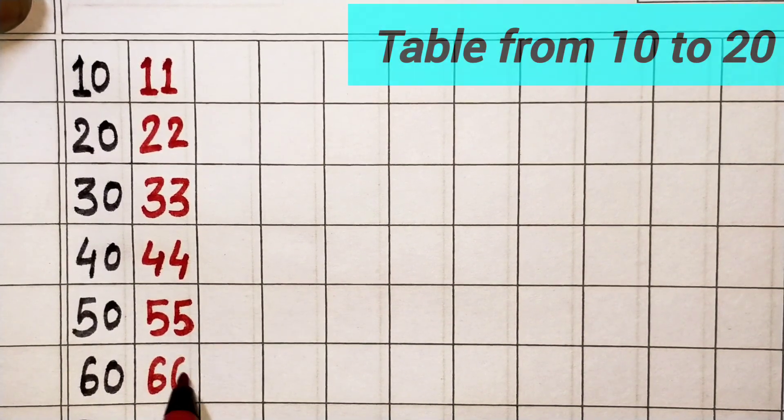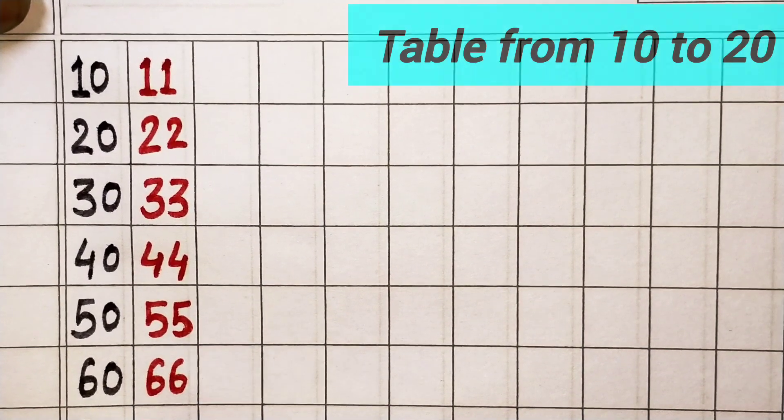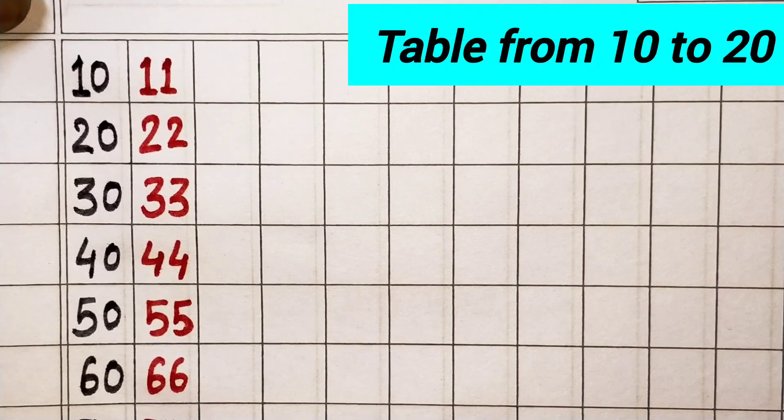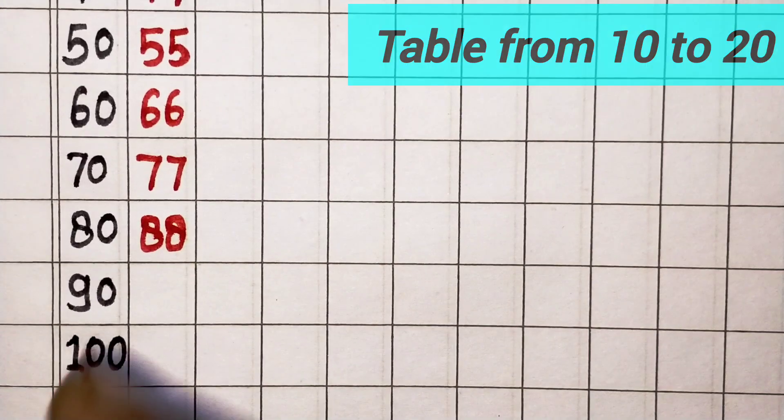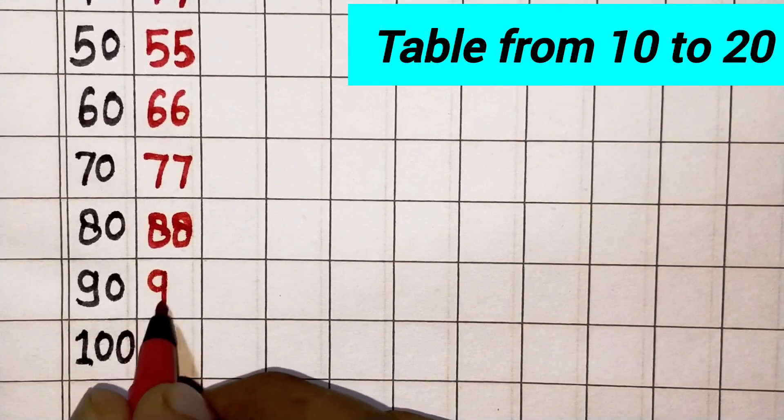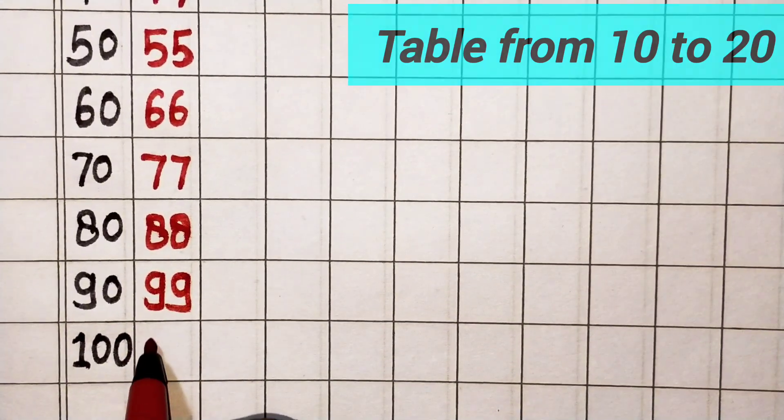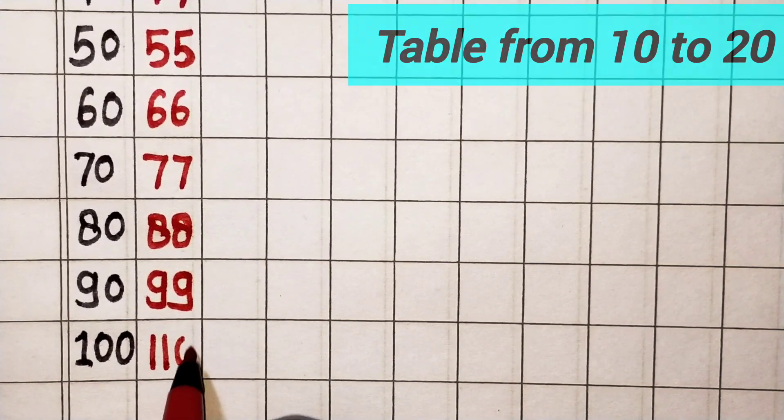11 times 6 is 66, 11 times 7 is 77, 11 times 8 is 88, 11 times 9 is 99, 11 times 10 is 110.